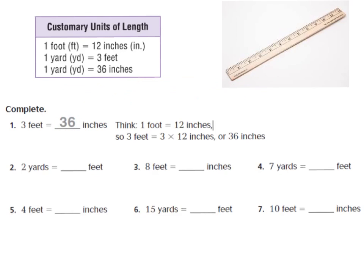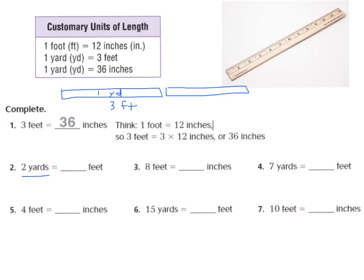Now for number 2, it says 2 yards equals how many feet? Let's look at our customary units of length. I see that 1 yard equals 3 feet. I'm going to draw a yardstick — 1 yardstick equals 3 feet. But it says 2 yards, so I'm going to make another yardstick. Using our model, 2 yards is equal to how many feet? If you said 6 feet, you were right, because 3 feet plus 3 feet equals 6 feet.